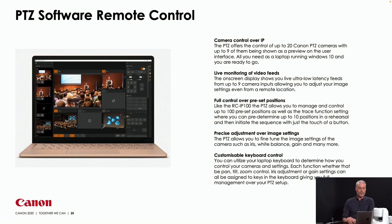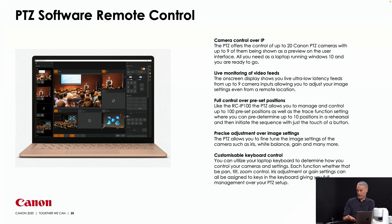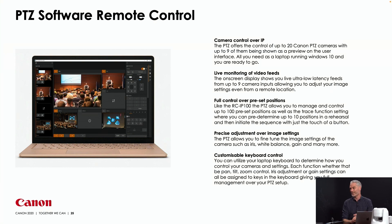A few words about controllers. We have our hardware controller, which we won't discuss much in this session, but the software controller is included in the price — just download it from our website and you're good to go on any PC with Windows 10 or higher. It can control 20 Canon cameras and preview 9 of them. You can have 100 preset positions on each camera and 10 rehearsal patterns that you record by moving the camera. You can also use any keyboard key to make a shortcut of your own choice.